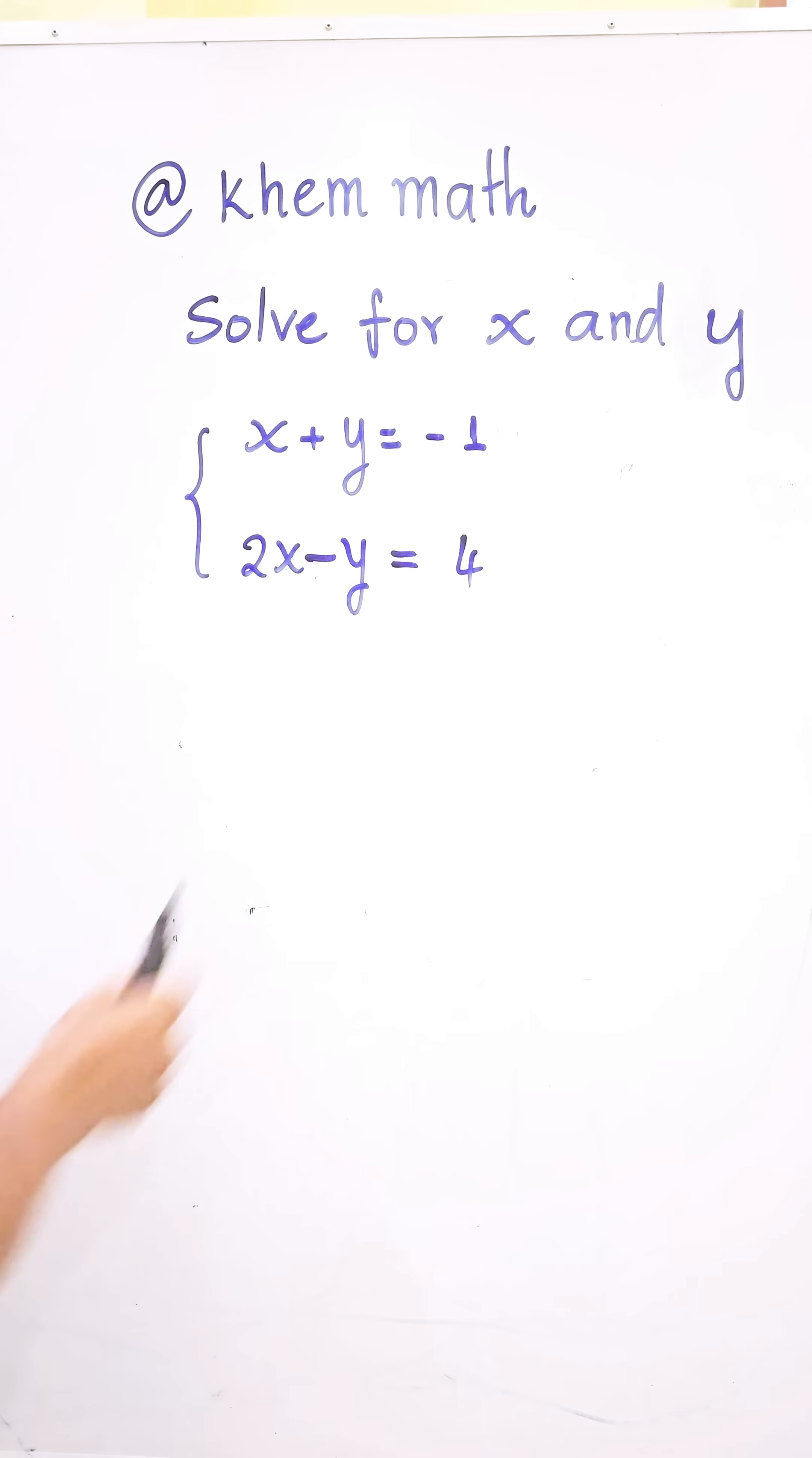Solve for x and y. Here is x + y = -1 and 2x - y = 4. We label this the first equation and this the second equation.